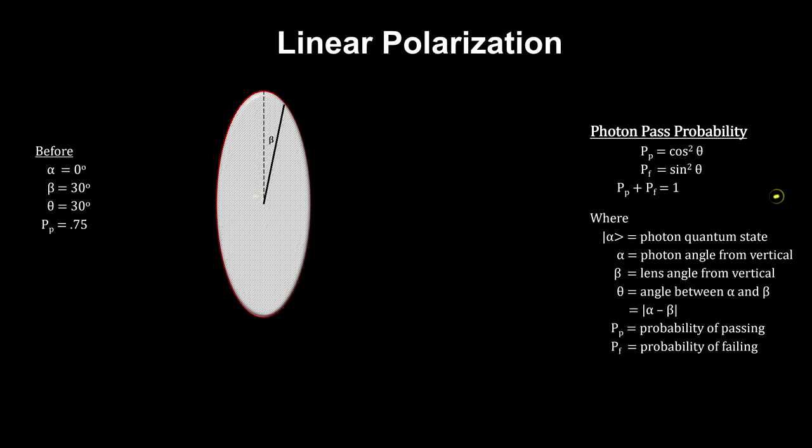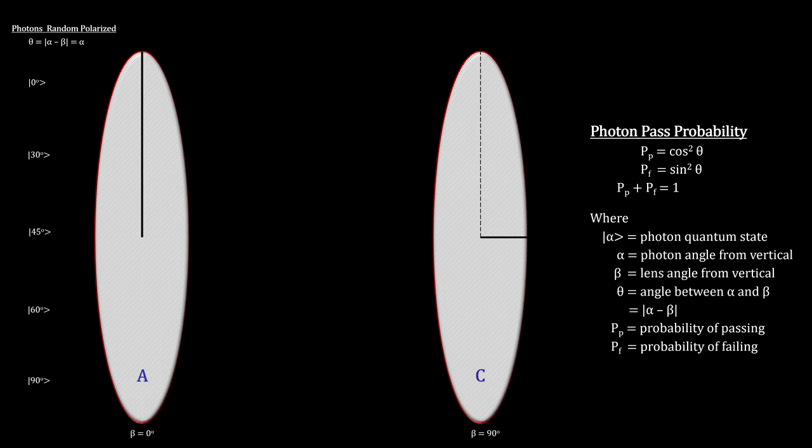In addition, the interaction between the lens and the photon will change the orientation of the photon's state to equal the orientation of the lens it passed through. With this understanding, we can examine how light made it through lens C once we added lens B.